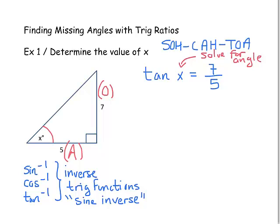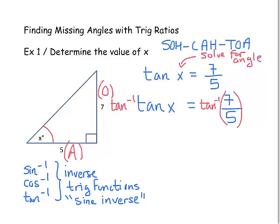To get x by itself, we can apply the inverse tangent on both sides of this equation. Rewriting the original equation: tangent of x equals 7 fifths. We'll apply the inverse tangent function to both sides. On the left-hand side, inverse tangent and tangent undo each other, leaving just x. On the right-hand side, we take the inverse tangent of 7 fifths, and x is approximately 54.462 degrees.